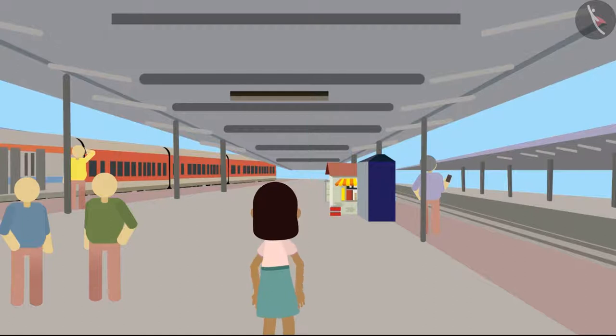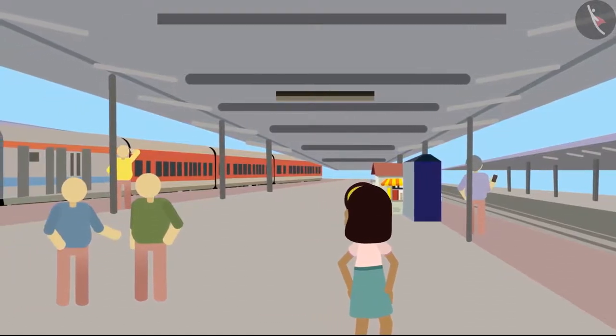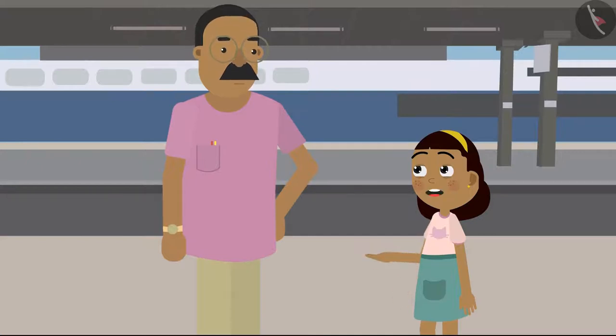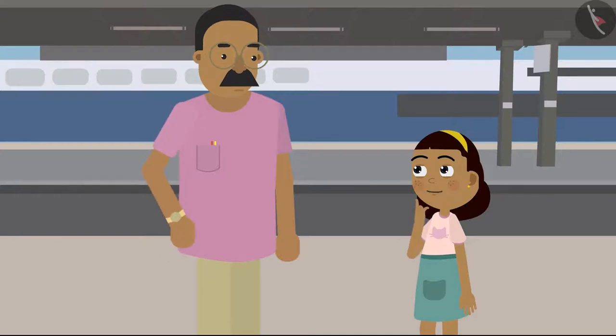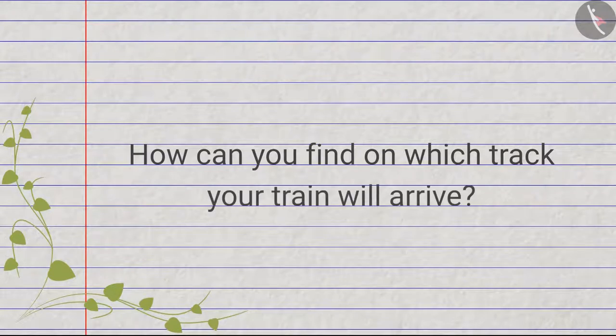On seeing so many people and trains at the station, Zia began to ask various questions to her father. Oh dad, there are so many train tracks here. How will we know where our train will arrive? How can you find on which track your train will arrive?